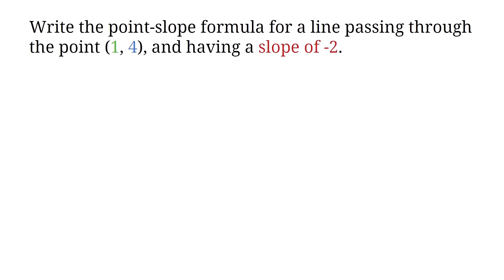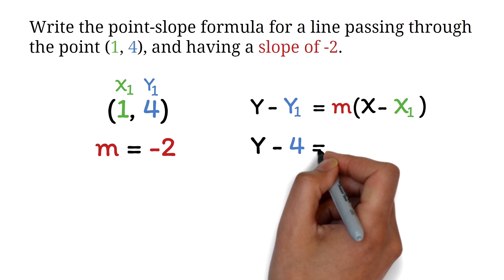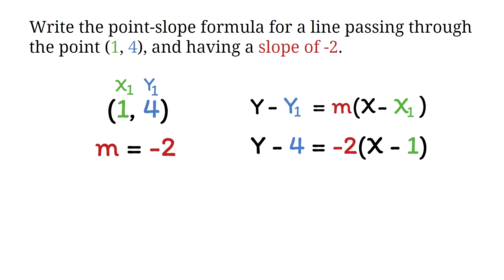Let's look at an example. Write the point-slope formula for a line passing through the point (1, 4) with a slope of negative 2. With m equals negative 2 and (x1, y1) equal to (1, 4), we substitute into the formula. We have y minus 4 equals negative 2 times (x minus 1). And that's it — we just substituted the values into the formula.